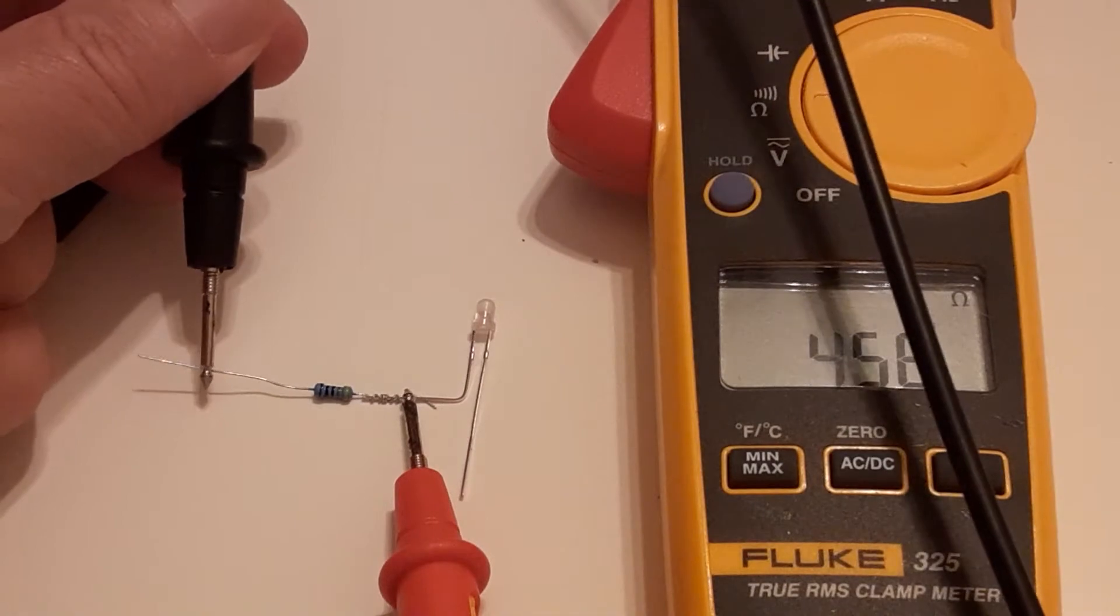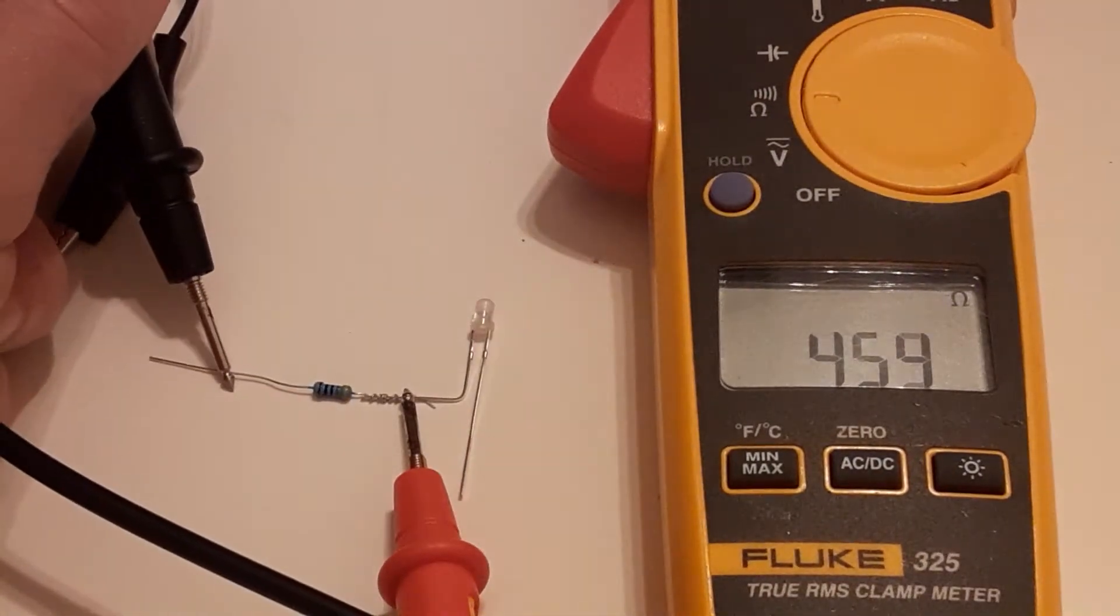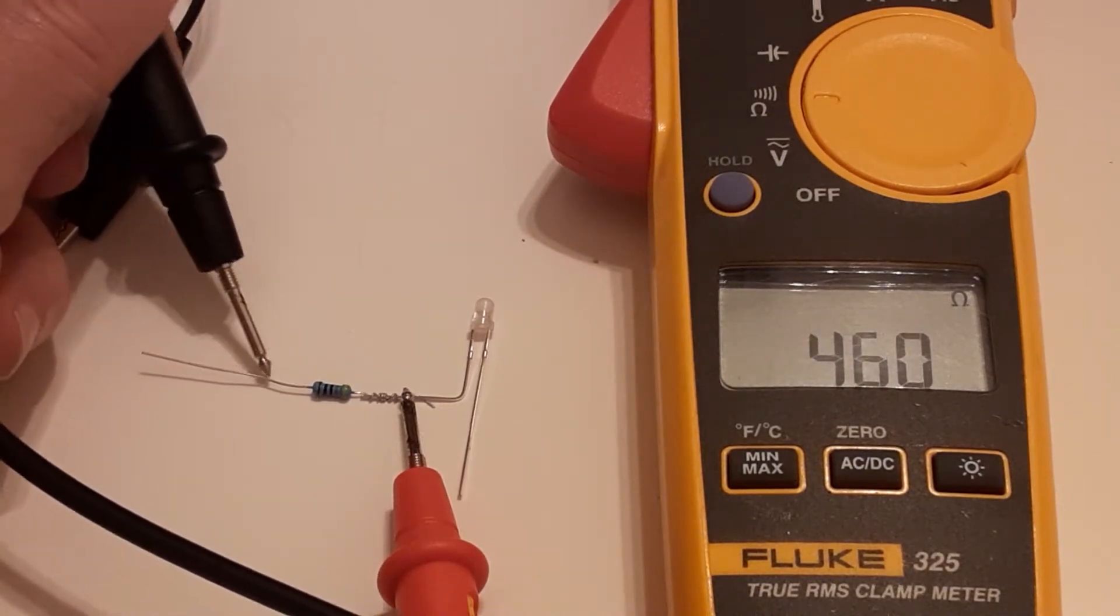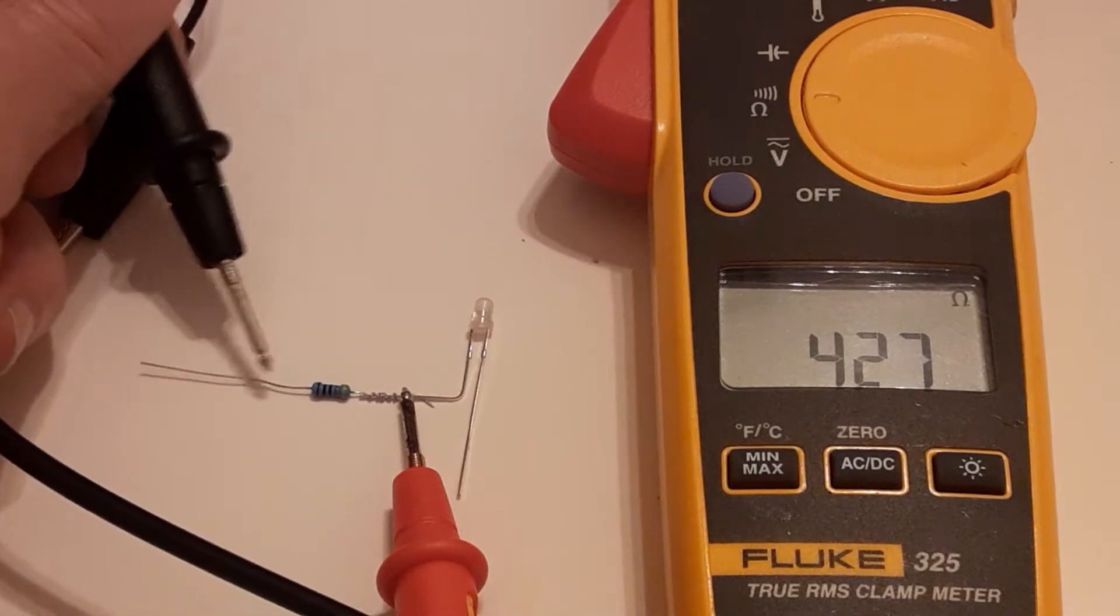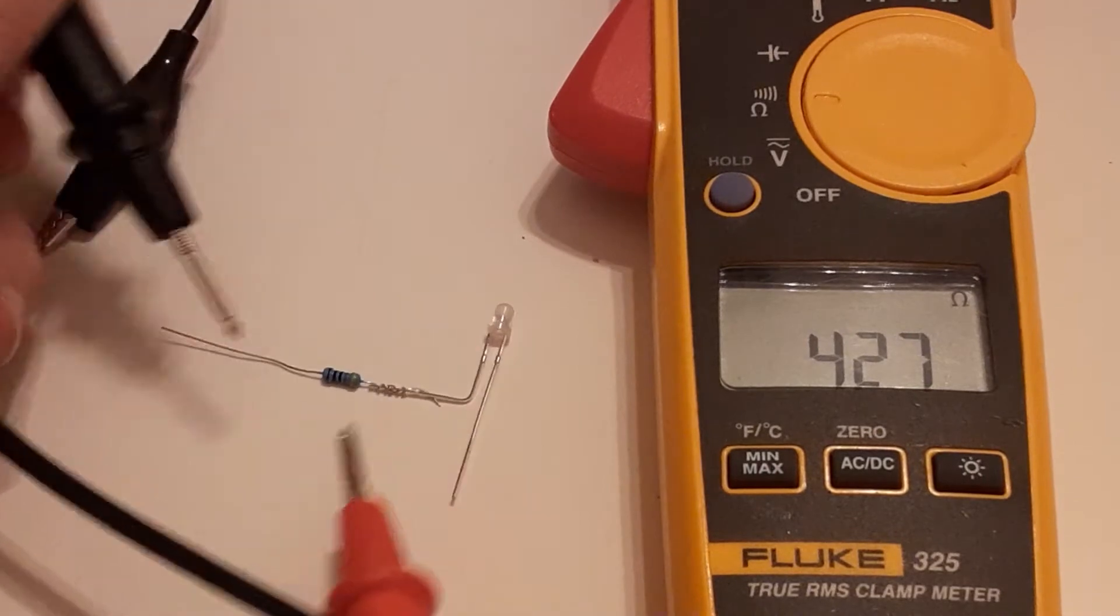What I'll do is I'll push down on this point right here to hold it in place. And I'll bring this probe down to the other side of the resistor. I get 442. Well, it's moving. Hang on, let me get a better contact. There we go. 427.